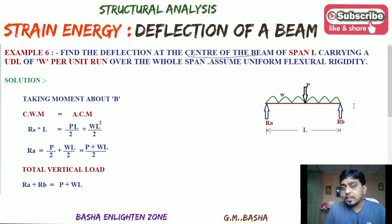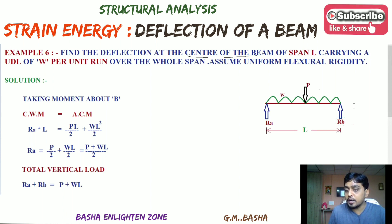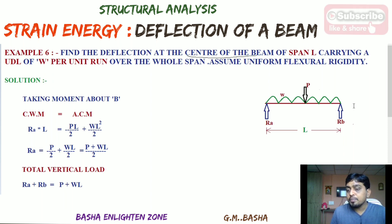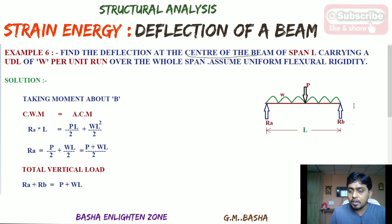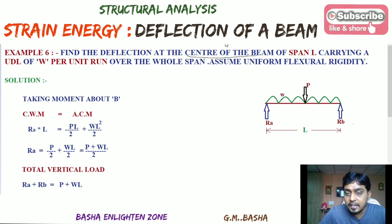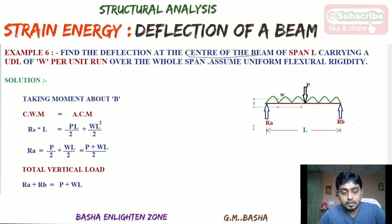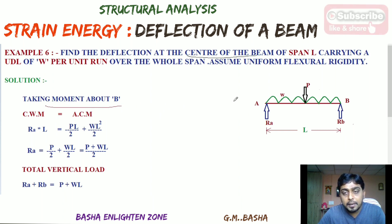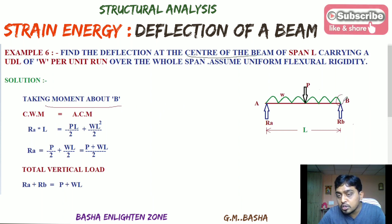Our first step is to find the reactions at the supports. If only a uniform distributed load were acting on a simply supported beam, the load would be distributed equally. But here a uniform distributed load along with a point load P is acting exactly at the center, so we proceed with the calculation. Taking support A and support B, I am resolving moments — taking moment about B — with clockwise moments on one side and anti-clockwise moments on the other.